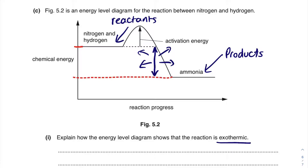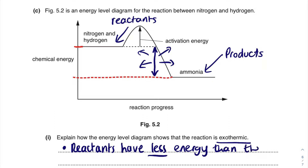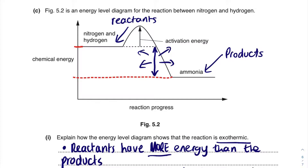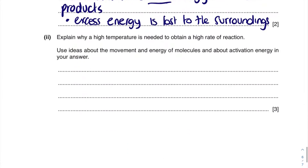The question says: explain how the energy level diagram shows that the reaction is exothermic for two marks. The first mark comes from saying the reactants have more energy than the products — or equivalently, the products have less energy than the reactants. The second mark comes from saying the excess or surplus energy is lost to the surroundings. That's how we know the reaction is exothermic, because the surroundings will warm up.